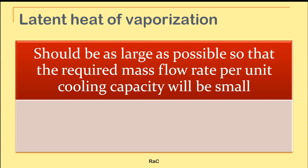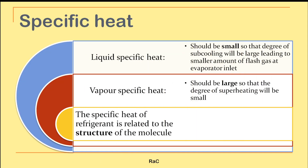The latent heat of vaporization should be as large as possible for an ideal refrigerant, because the required mass flow rate per unit cooling capacity should be reduced. Heat absorbed Q equals mass flow rate m multiplied by cp multiplied by ΔT — so if the latent heat is higher, the mass flow rate of the refrigerant can be reduced.